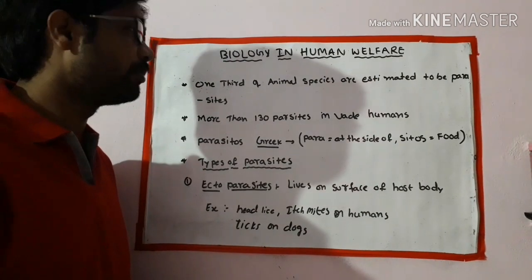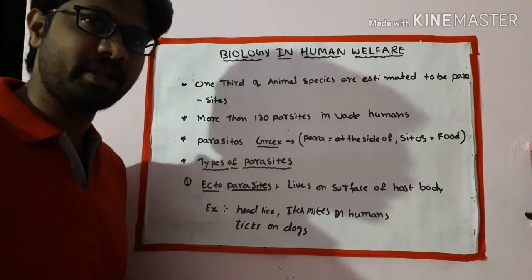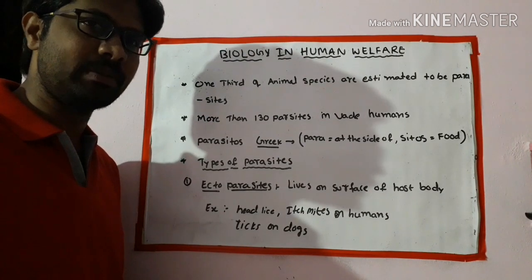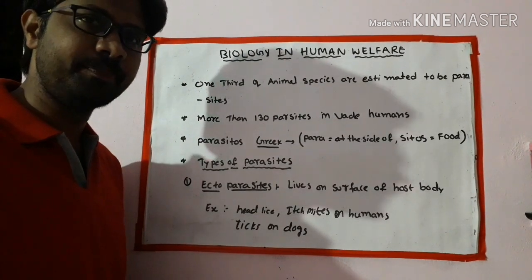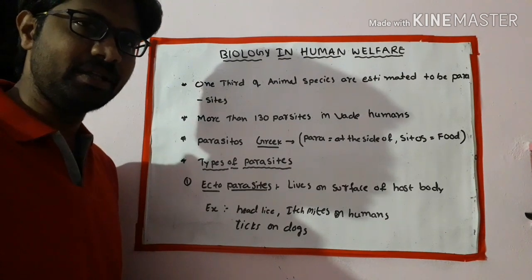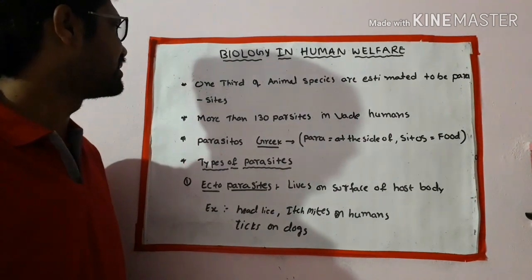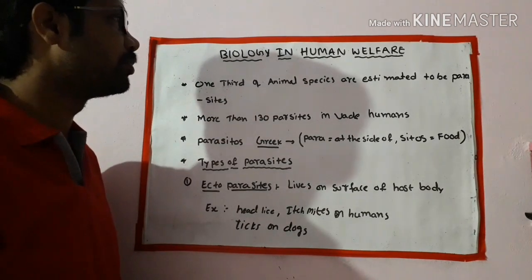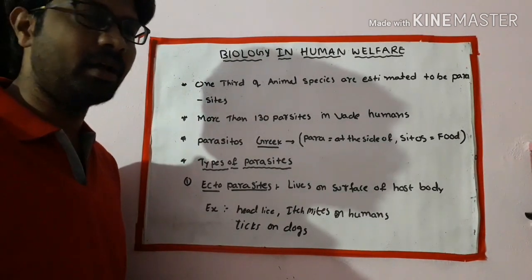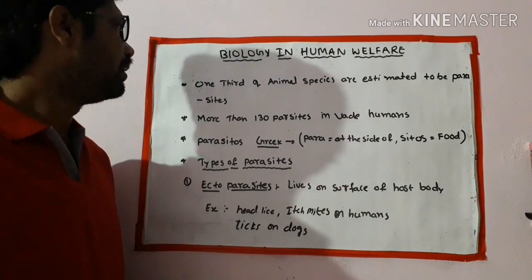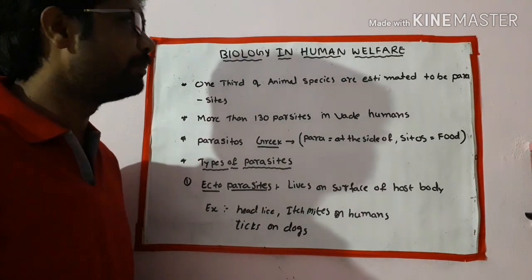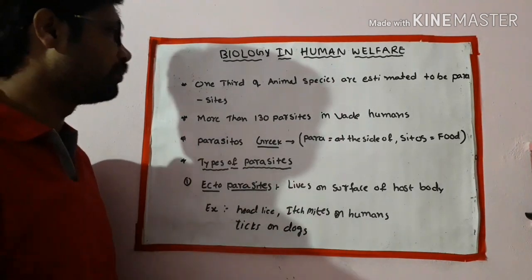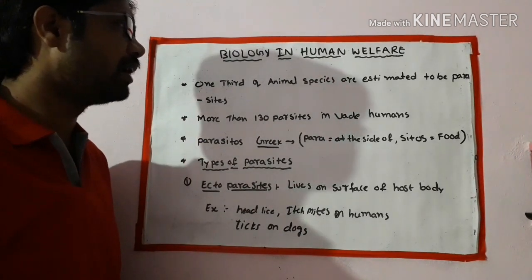From the intermediate point of view, there are 5 parasites in the life cycle — parasite and host, and there are vectors. The first point is: one third of animal species are estimated to be parasites. There are 130 parasites on humans.